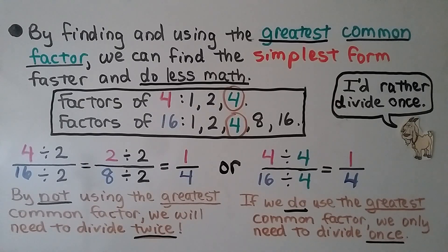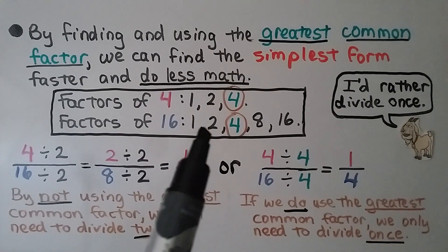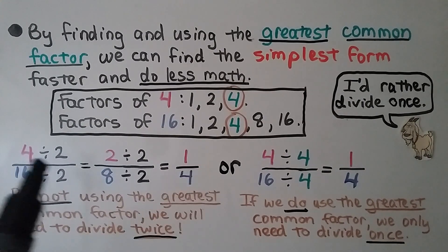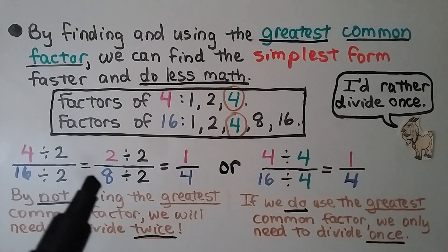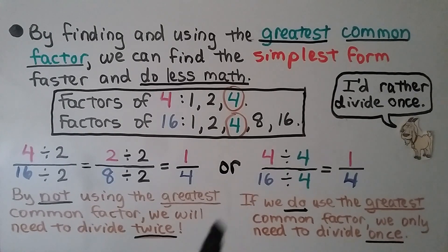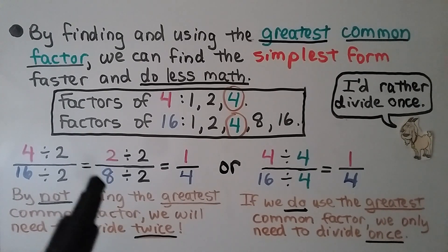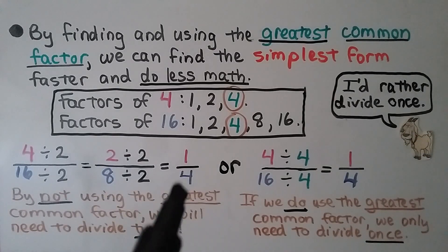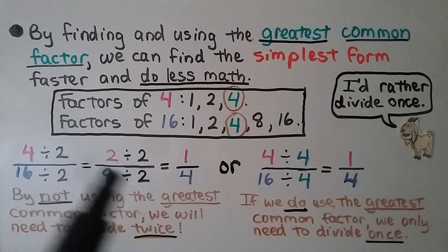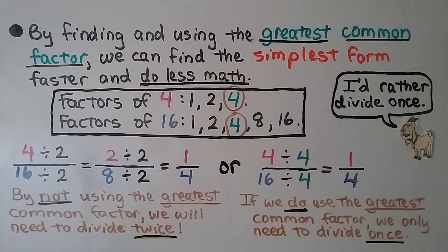By finding and using the greatest common factor, we can find the simplest form faster and do less math. We have four-sixteenths. They have the common factors one and two. If we didn't use the four and used the two, we'd divide four by two to get two, and sixteen by two to get eight. But by not using the greatest common factor — four — we need to divide again. Two and eight have the factor two in common, so we divide two by two to get one, and eight by two to get four. Now we have it in simplest form, but we had to divide twice. If we divide by four, we only divide once and get one-fourth. Even the goat says he'd rather divide once.